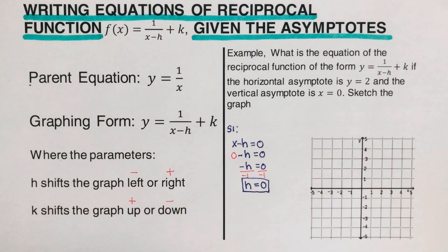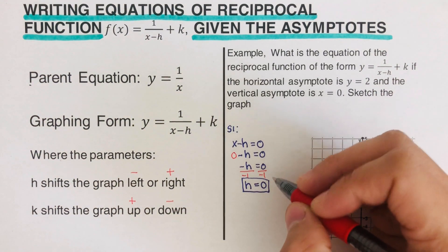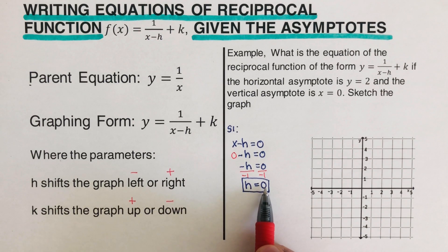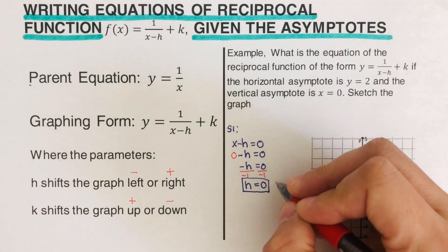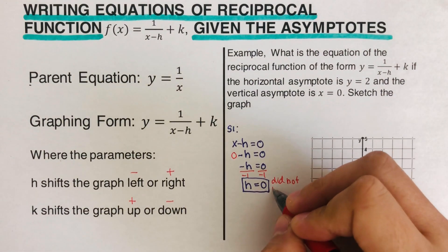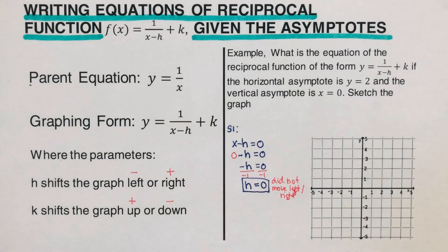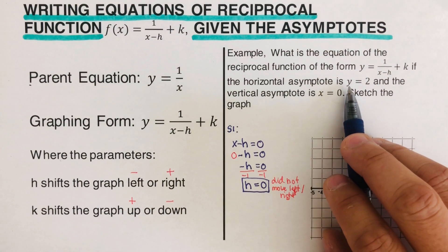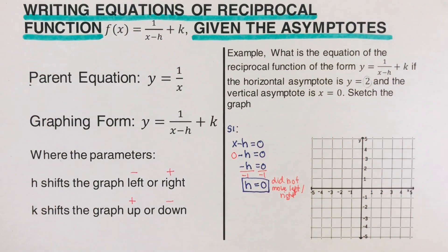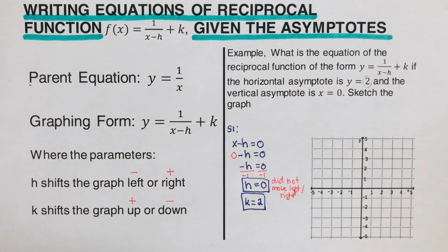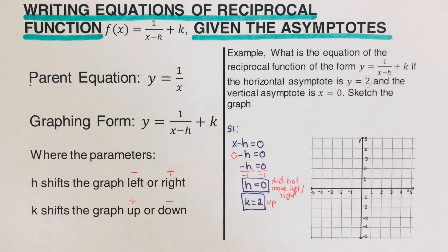Since h = 0, the graph did not move left or right — zero is neutral, neither positive nor negative. For k, the value is straightforward: whatever the horizontal asymptote value is equals k. Our horizontal asymptote is y = 2, so k = 2. Since this is positive 2, the graph moves up two places.